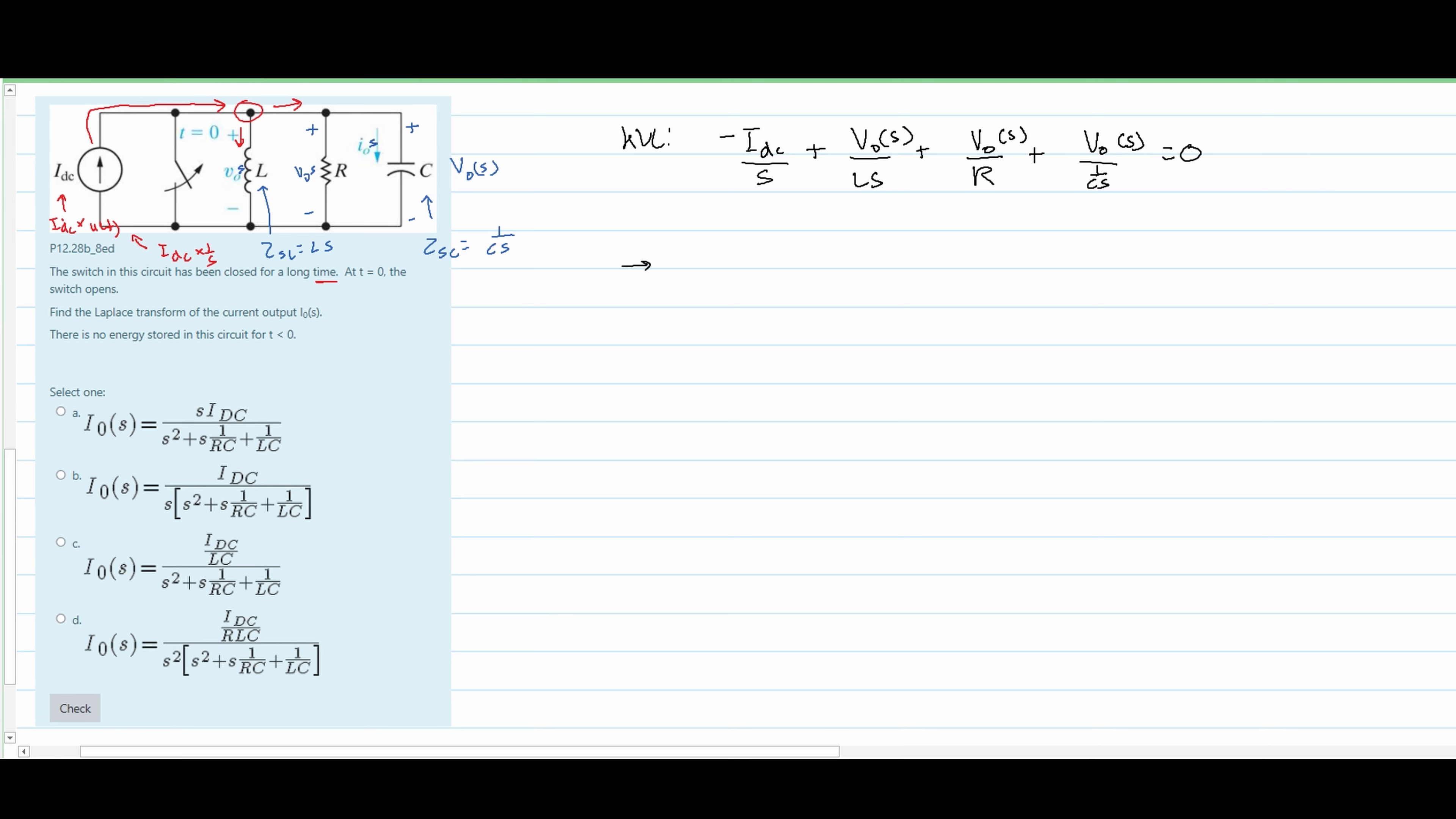And now we can continue. I'm going to move the current to the right side to get rid of that negative, and then I'm going to factor out the V0(s). So this is going to give us V0(s), and then inside of here we're going to have 1 over Ls plus 1 over R plus capacitance times s.